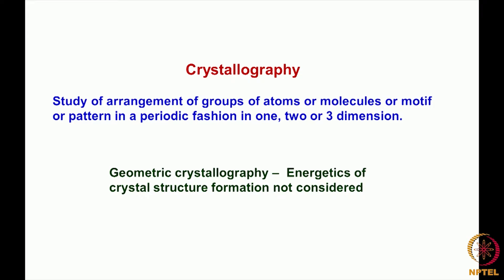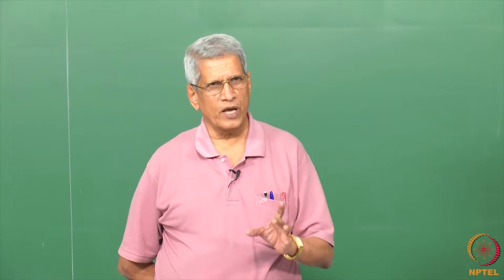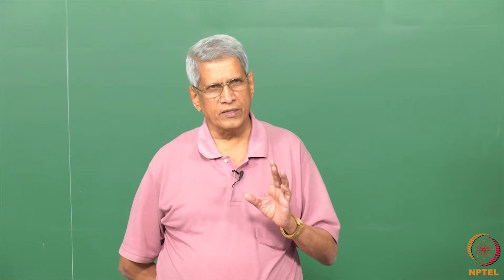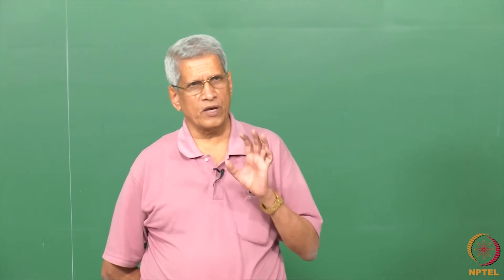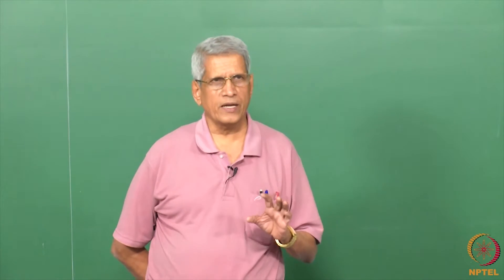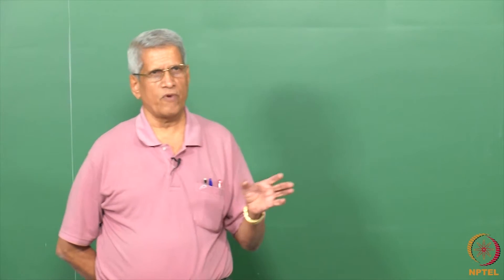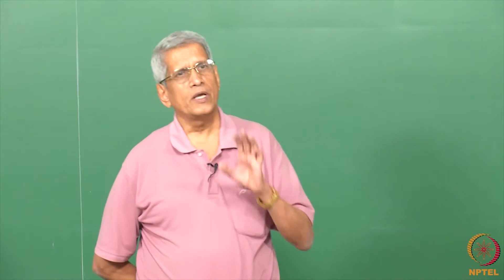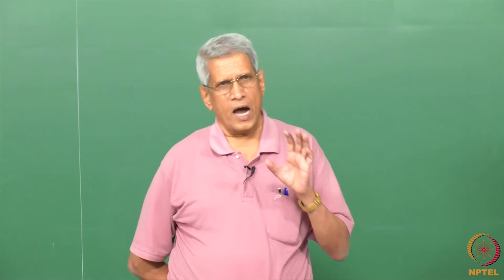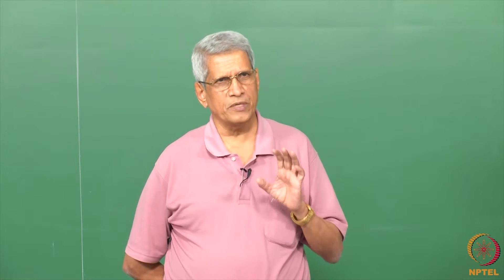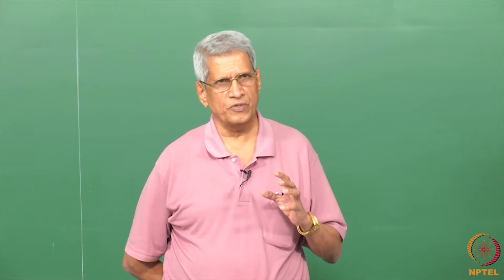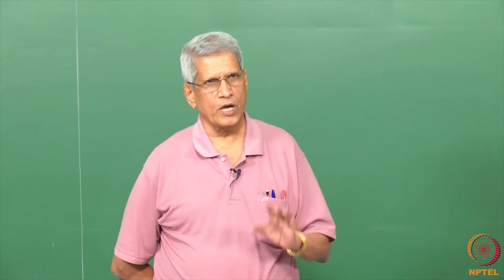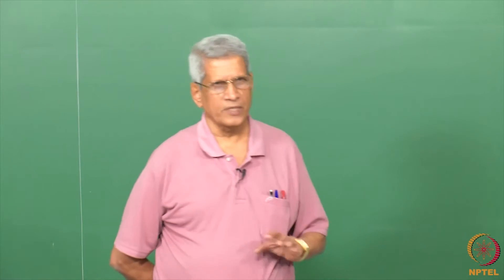Geometric crystallography tells us what all the options available are — if a substance has to form a crystal, what are the crystal structures it can form. Geometrical crystallography is a sort of probability of looking at what structures can be formed, based on the type of symmetry associated with different types of crystals. So what all possible arrangements we can have — that is what geometric crystallography is about.